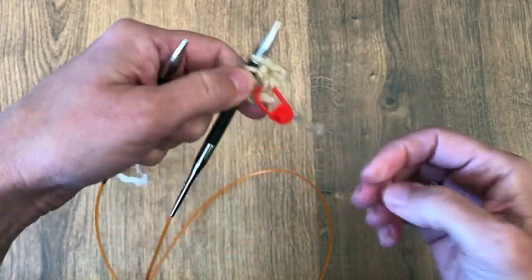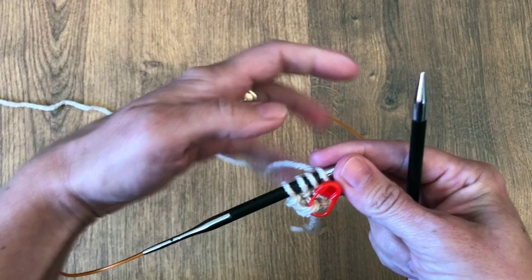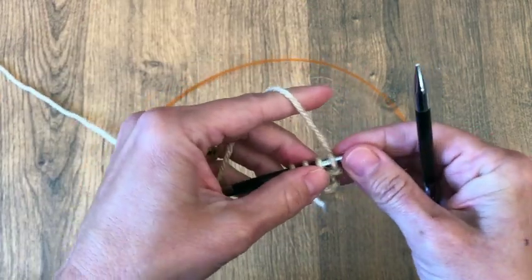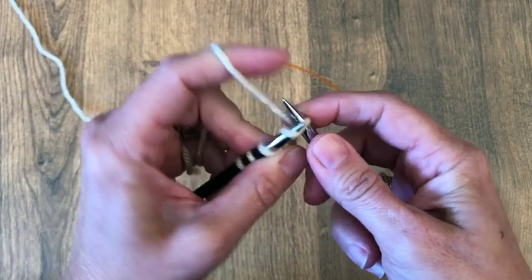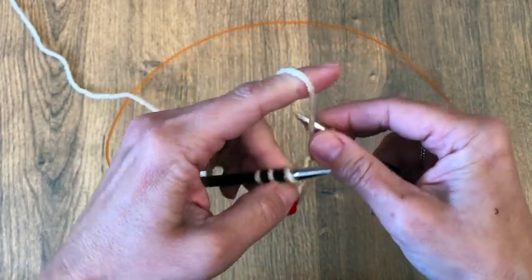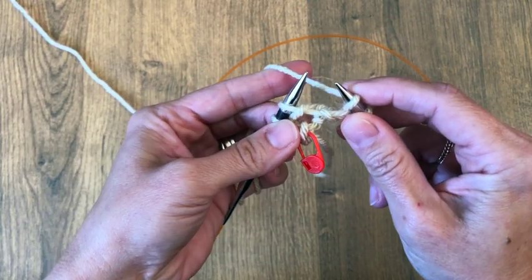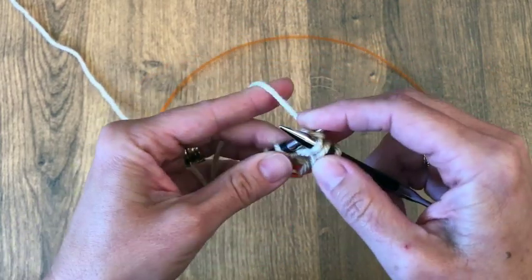Okay, so now we're on the side that has our red stitch marker, so we're going to knit one, yarn over, and then knit across. Knit one, yarn over, bring it forward and wrap it over the right needle, insert my needle to the next one to knit the next stitch.